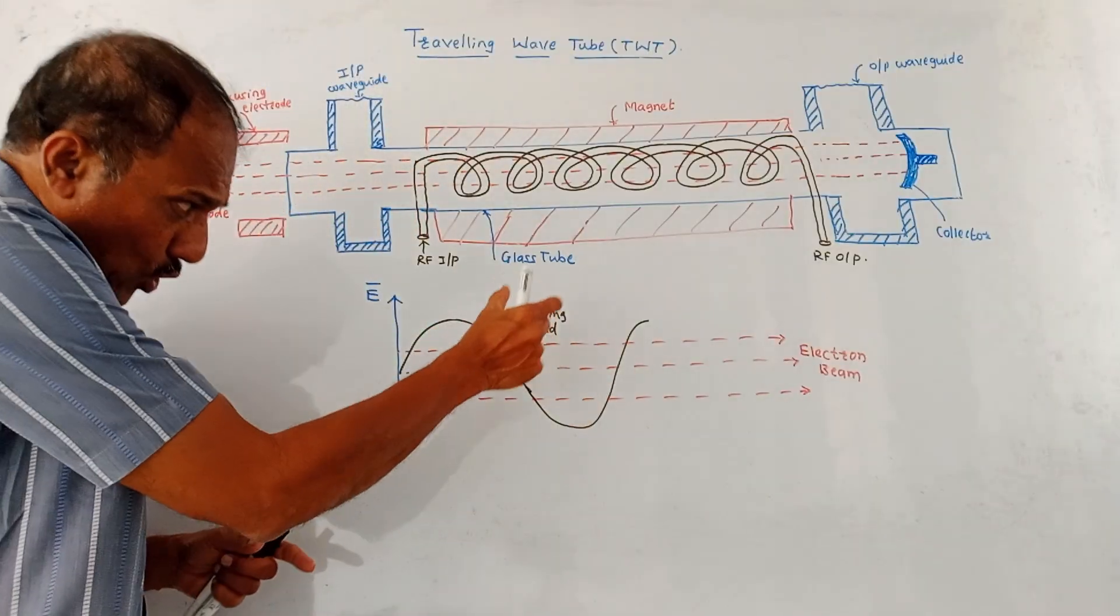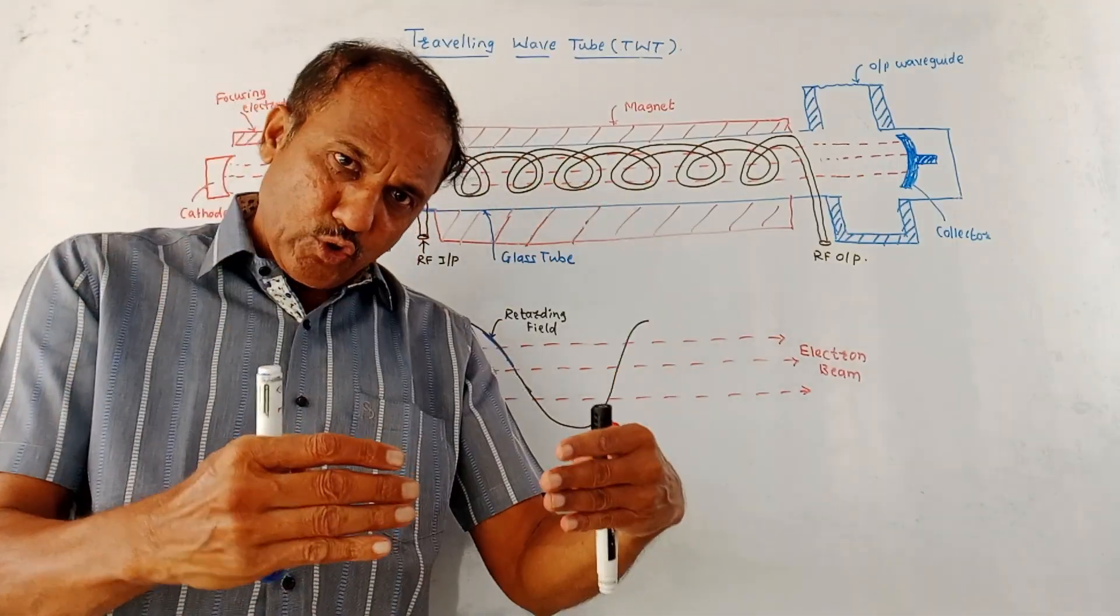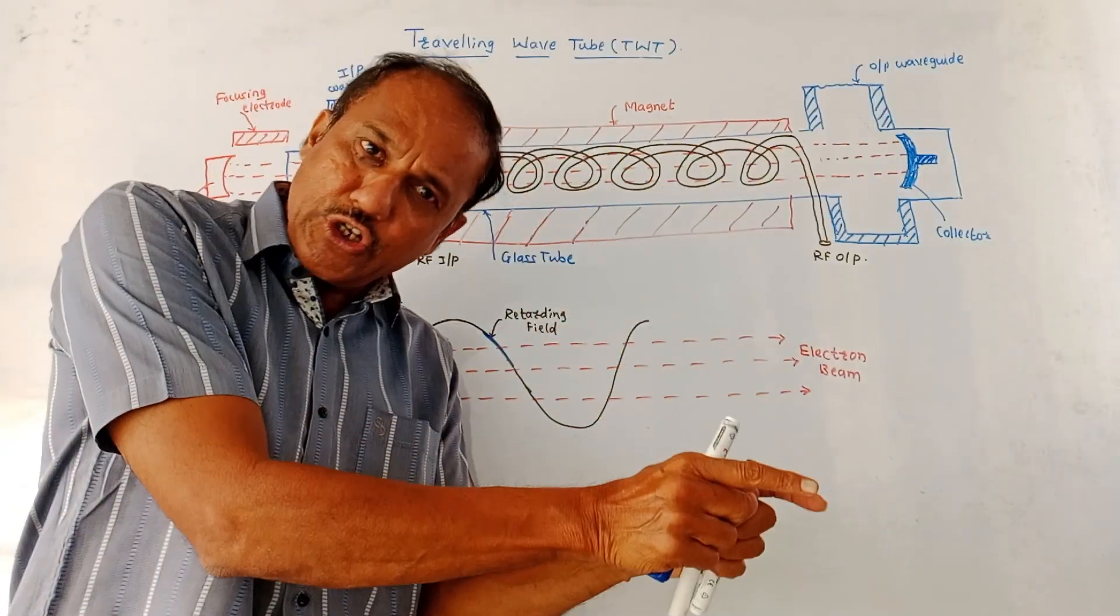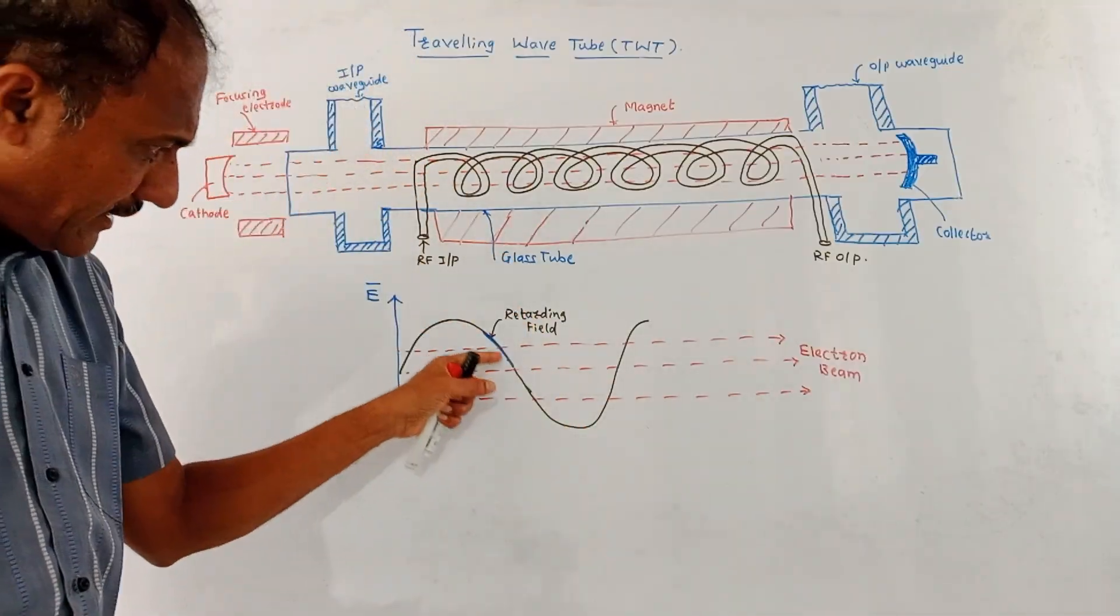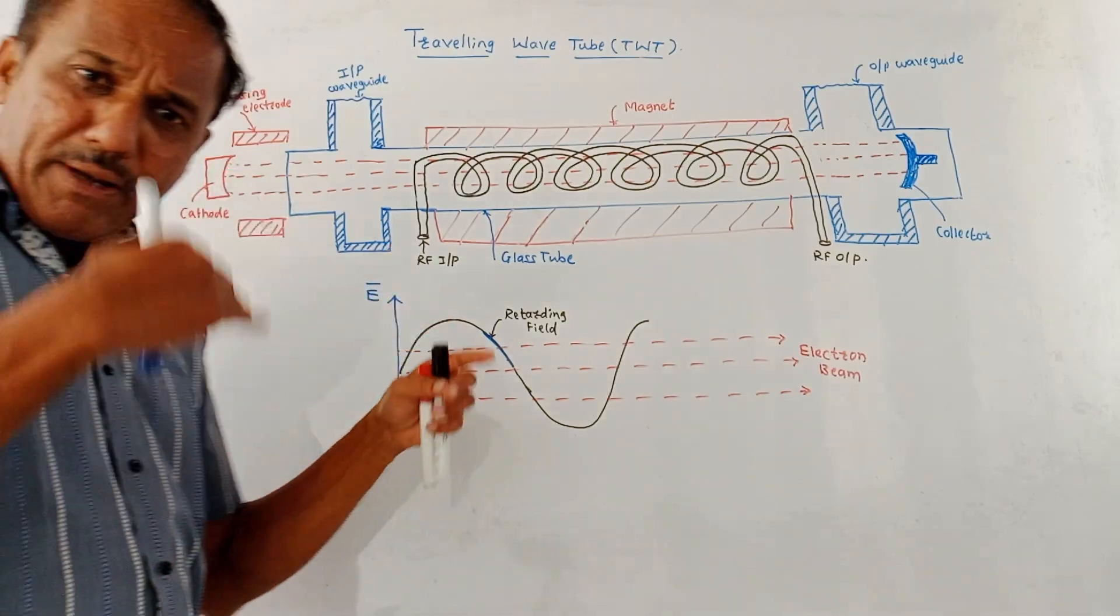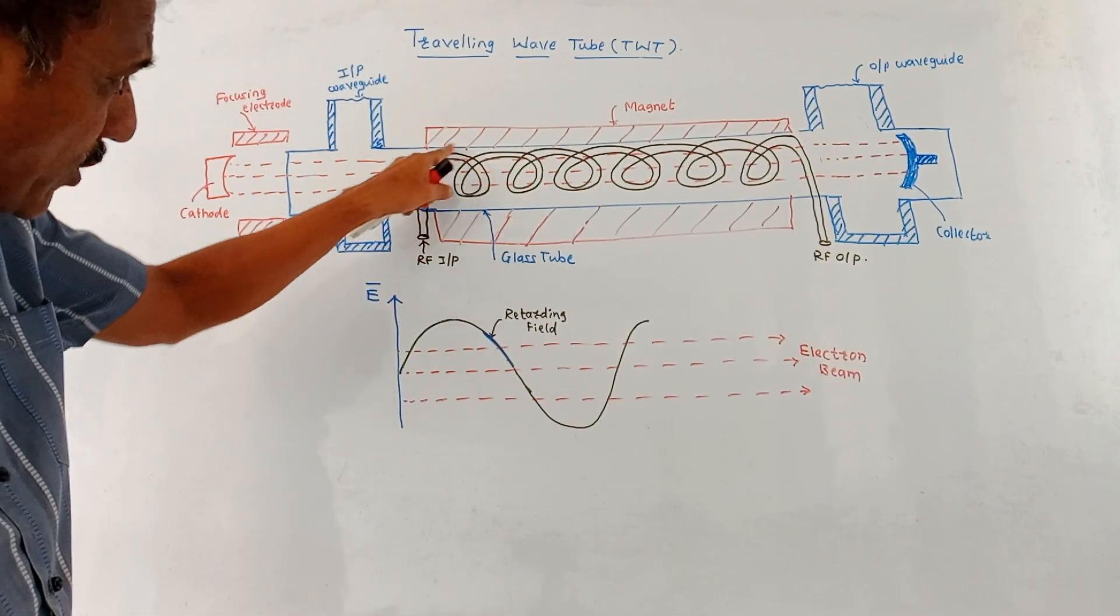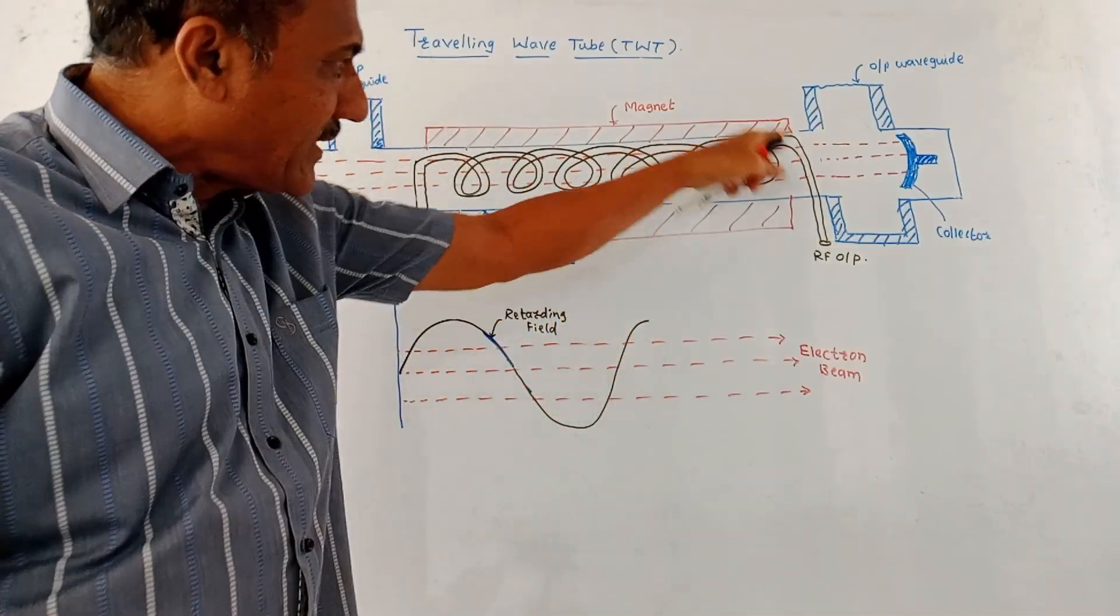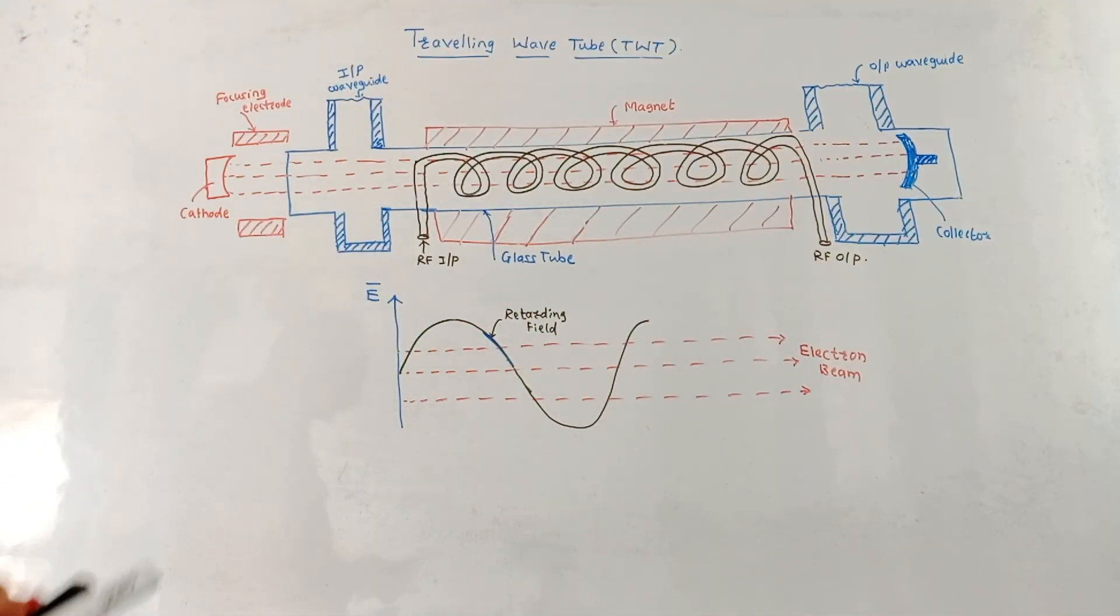Now another important concept is those electrons which are entering whenever electric field is retarding, their speed gets reduced. So such electrons transfer their energy to the field and in turn, the field transfers the energy to the micro signal. So amplification of micro signal takes place. Number of electrons which are entering in the retarding field are more than those electrons which are entering whenever the electric field is accelerating. So amplification process takes place. The different bunches are formed and signal gets amplified. As we move from one turn of helical coil to the next turn, the bunching process goes on increasing, goes on improving. So at the output where we have written RF output, you are getting amplified signal. So this is the way how this traveling wave tube works.